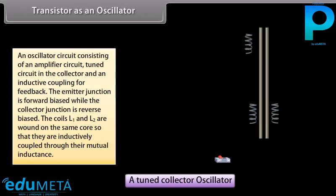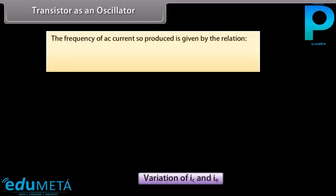On pressing the key, collector current suddenly starts flowing through L1. Consequently, a voltage is induced in coil L2, which charges capacitor C with a polarity that supports the forward bias of the base-emitter circuit. On reaching saturation, collector current stops varying. Hence, induced EMF in coil L vanishes. The frequency of AC current produced is given by: f = 1 / (2π√(LC)).